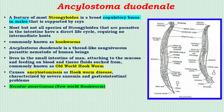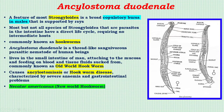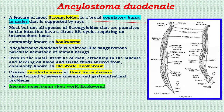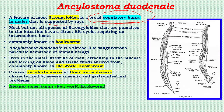Ankylostoma duodenale actually belongs to a group known as Strongyloidea in class Nematoda. All these parasites are provided with a broad copulatory bursa, and the presence of this broad copulatory bursa is the characteristic feature of these parasites, which is present in the male, supported by fleshy rays, as you can see in the diagram.